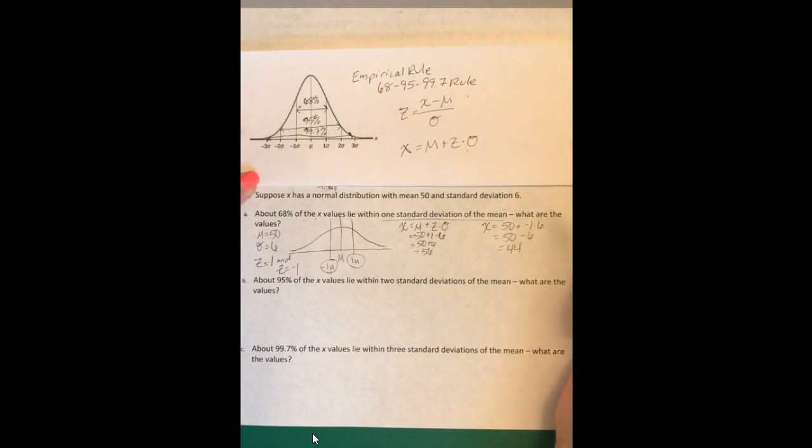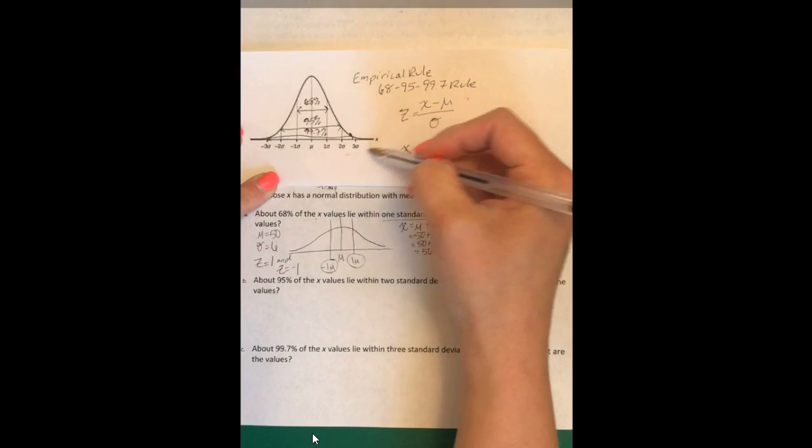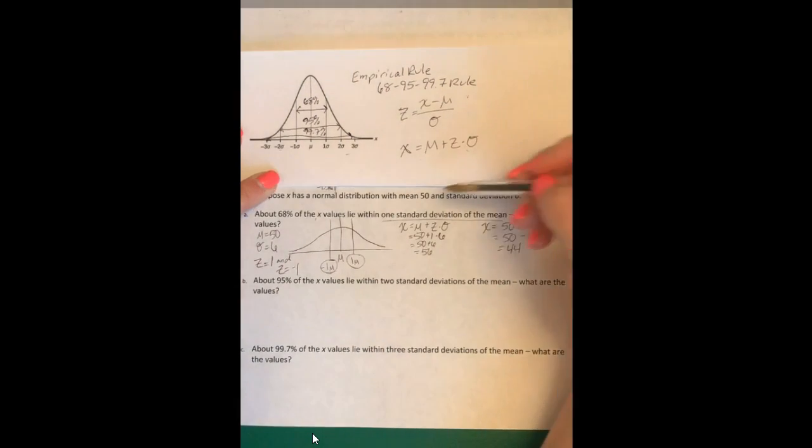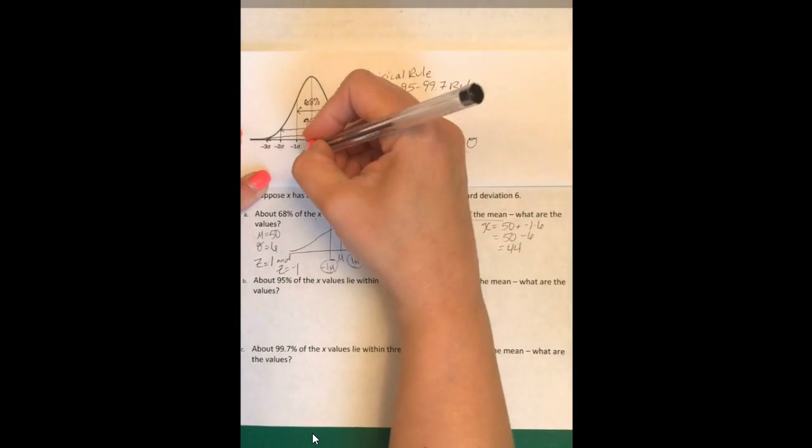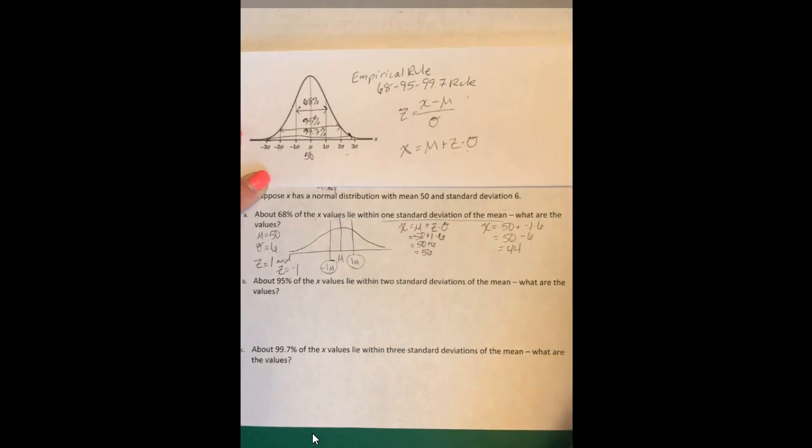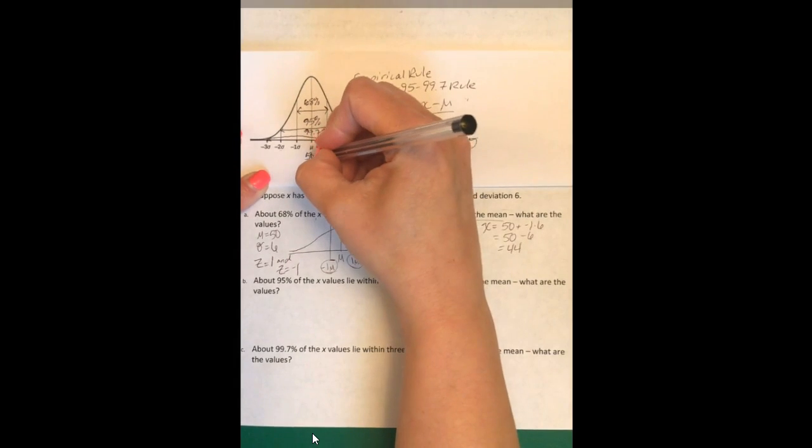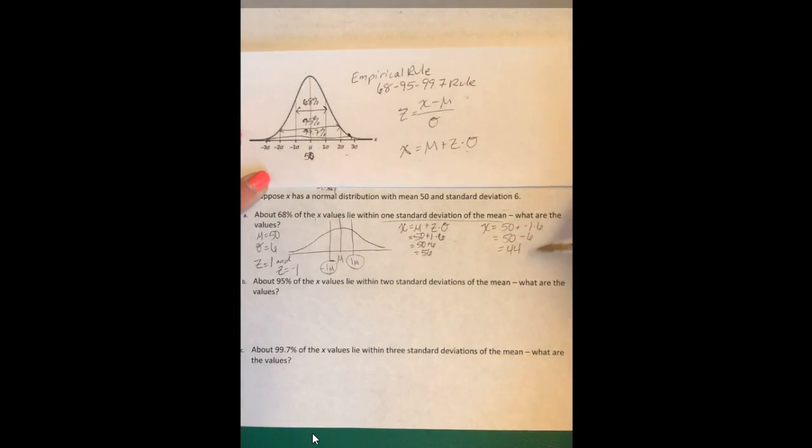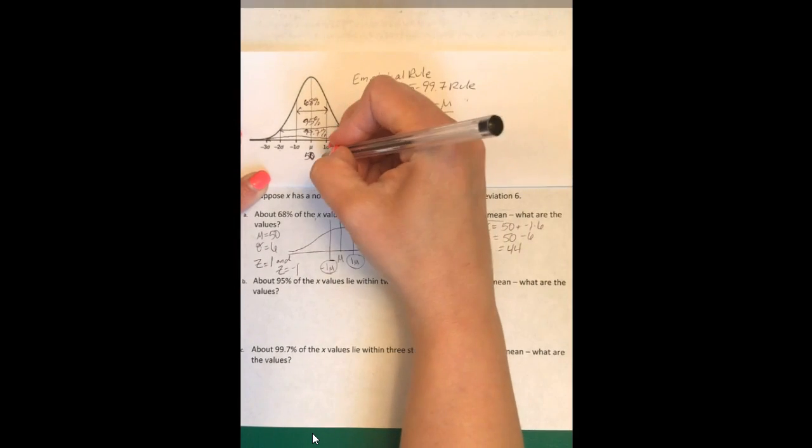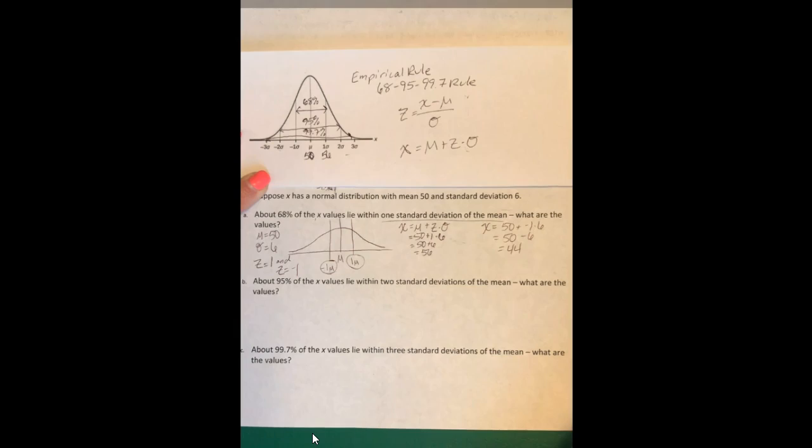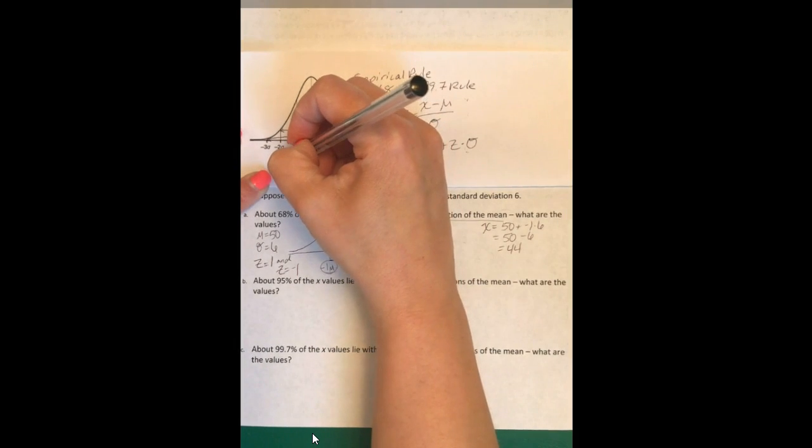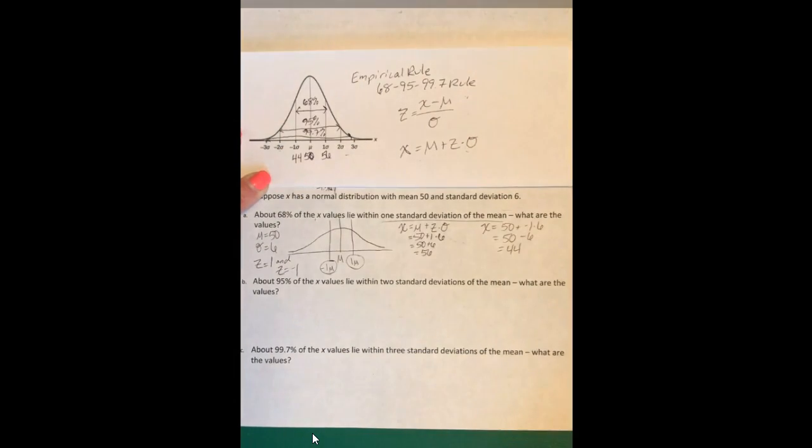Let's reference this. Pretend that this distribution right here is the one that we are talking about. The mean is at 50. What we have just found is that one standard deviation to the right is 56 and to the left is 44. So let's go ahead and do this two more times with 95% and then the 99.7%.